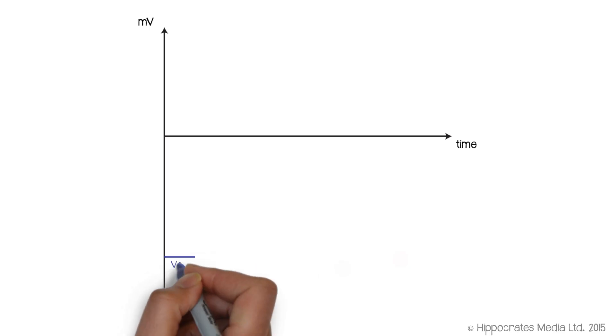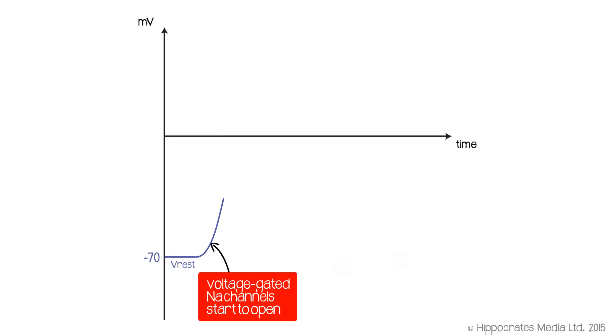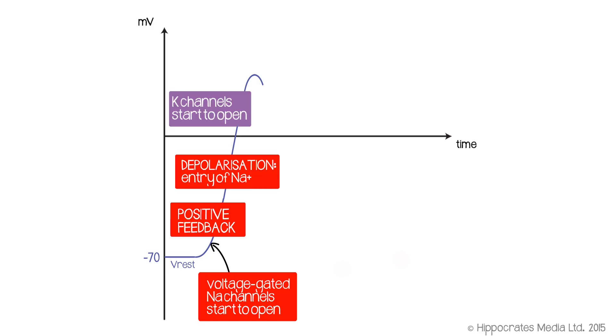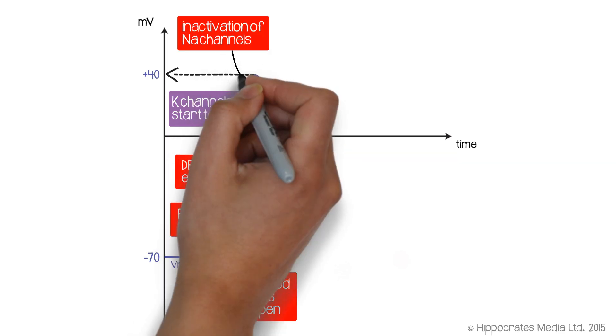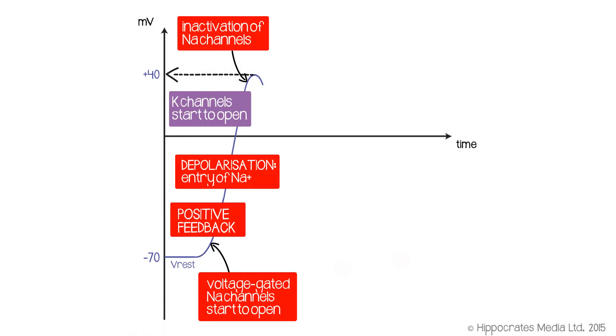So the course of the depolarization during an action potential is that a small initial depolarization causes the voltage-gated sodium channels to open. That allows sodium into the cell, which means more channels open, positive feedback. The membrane depolarizes, but at the same time, the potassium channels were opening too. They just open a little bit more slowly. But at the point where the sodium channels are inactivating, we have a lot of potassium channels which are open. That means that instead of sodium coming in, potassium is now leaving. Positive ions are leaving the cell. The membrane potential goes back to its negative value and returns to rest.